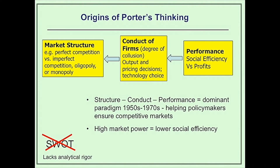Porter, dissatisfied with the effectiveness of the SWOT analysis, saw an opportunity: if he turned around that thinking, firms could discover areas where there was less intense competition and therefore could increase the profitability of their activities. He identified five fundamental forces that influence the intensity of competition and therefore the profits available in an industry.